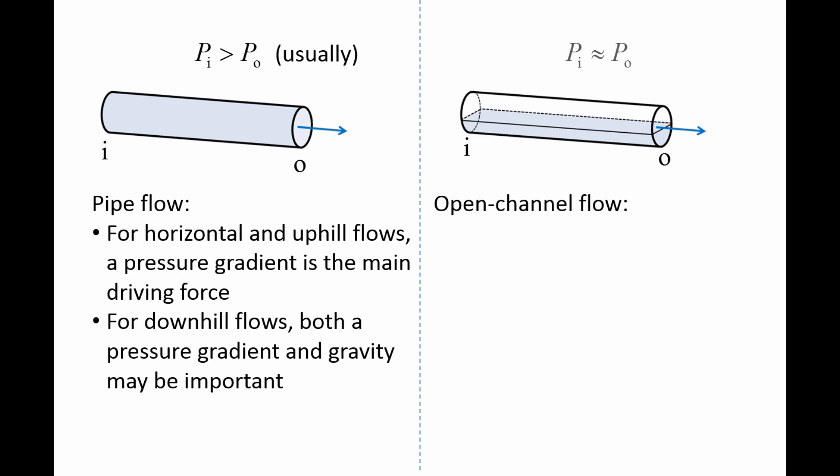For open channel flows, the pressure is approximately constant along the entire surface of the liquid, and gravity is the main driving force transporting the liquid along the pipe system. Since there is no pressure gradient, the liquid can only flow downhill.